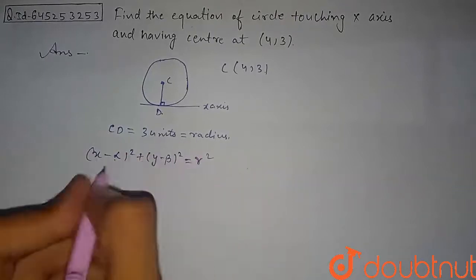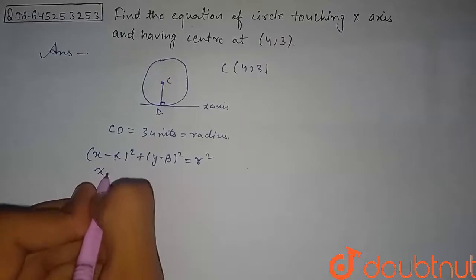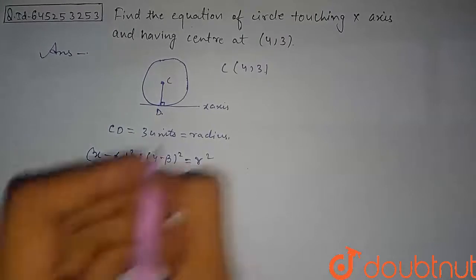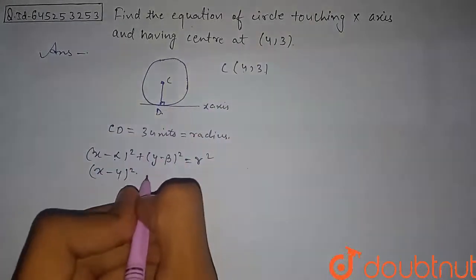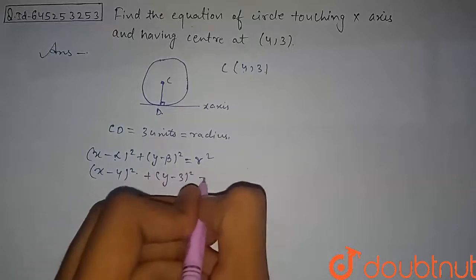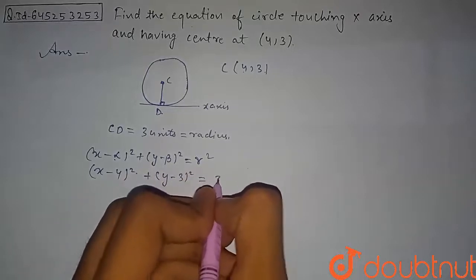So from here, if you substitute values, we get our circle equation as (x - 4)², that is x coordinate of center, and here will be (y - 3)², and that will be equal to R² which is basically 3².